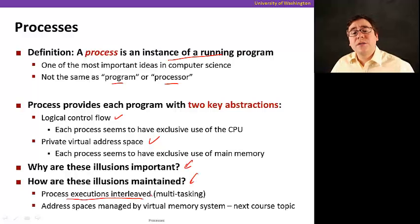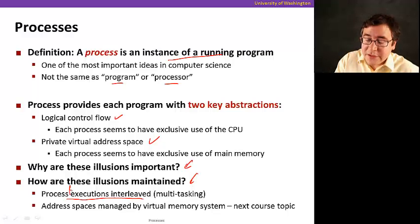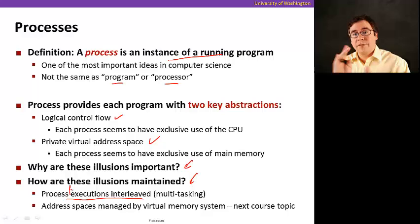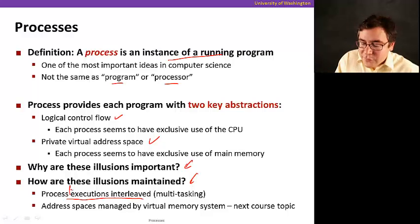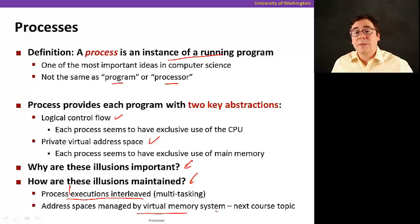And how are these illusions maintained? Well, first of all, process executions are interleaved. That means that from the processor point of view, it's switching between one process and the other. And the address space is managed by virtual memory, by the virtual memory system, which is going to be a topic of our next section.